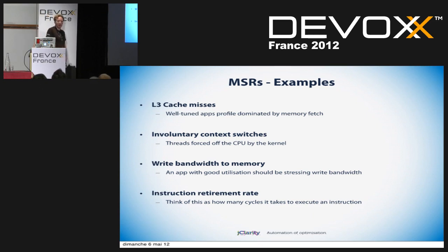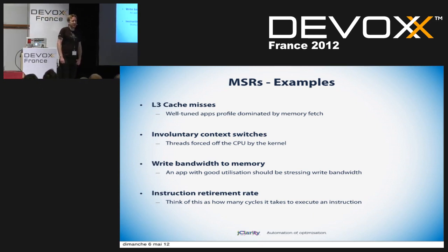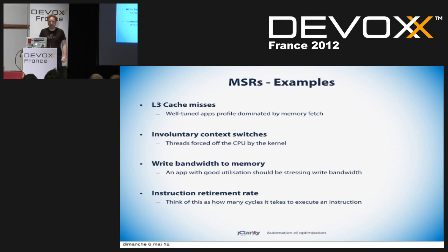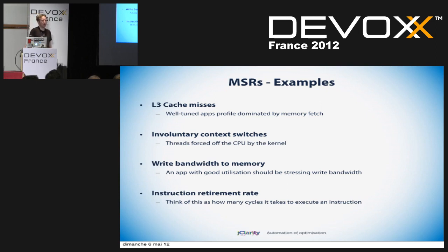The other good numbers are write bandwidth to memory. Once you've figured out your app is well-tuned and your memory profile is dominated by L3 cache misses, the next question is are you maxing your write bandwidth? That's a second-level indicator that your application is well-tuned. The last metric is the instruction retirement rate — roughly how many cycles it takes to execute an instruction. If you've got to do a main memory fetch, this number goes up. If all you're doing is lots of addition, this number stays nice and small. This is the bleeding edge for utilization numbers.